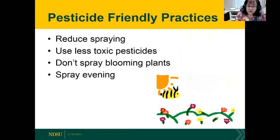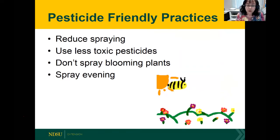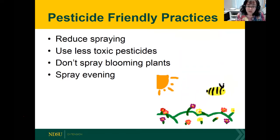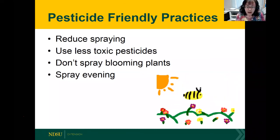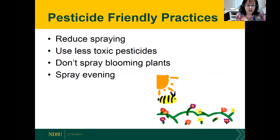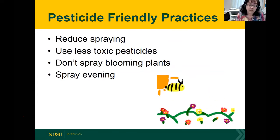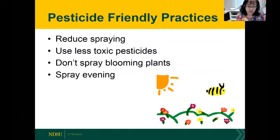Our fourth step is to be very wise in how you use pesticides. If at all possible, reduce spraying. If you have to use a pesticide, choose the least toxic one you can. Make sure not to spray your blooming plants — particularly your apple trees, don't spray when they're in bloom, wait till petal fall. When it comes to the time of day to spray, you'll do the least harm if you wait till late evening once the bees have retired for the evening.